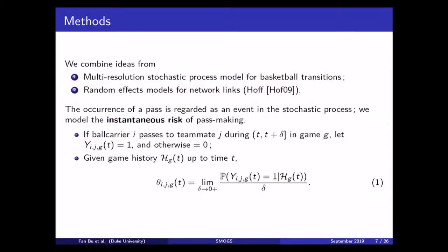Just to be a little bit more formal, we define this indicator function that takes the value one if there is a pass from the ball carrier i to a teammate j at a certain time point in a particular game. Otherwise, it's just zero. And this risk function we are interested in is just the instantaneous probability of this event, of this pass.